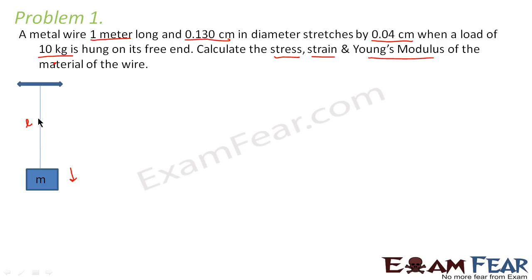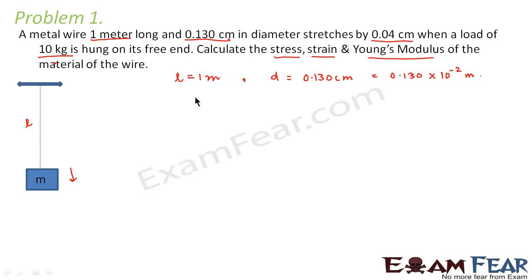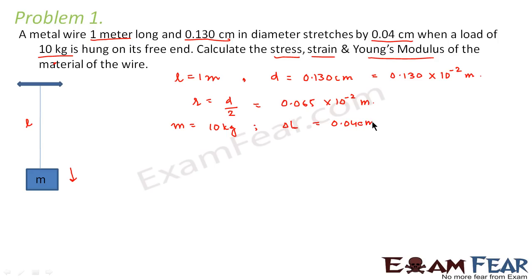The given values are: initial length L = 1 meter; diameter = 0.130 cm = 0.130 × 10⁻² meters, so radius = 0.065 × 10⁻² meters. The mass hung at the free end is 10 kg, and the change in length delta L = 0.04 cm = 4 × 10⁻⁴ meters. We need to calculate stress, strain, and Young's modulus.